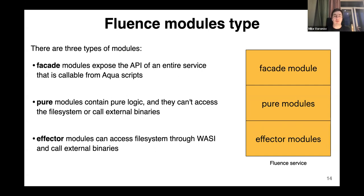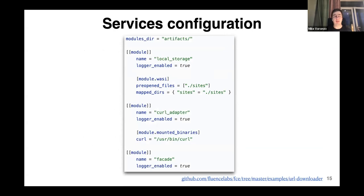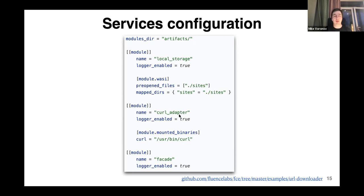The last one is a facade module. Facade modules expose the API of an entire service, and they can be called from Aqua scripts. Each service can have only one facade module. Also, each service is identified by a special service configuration file. You can see an example — the URL downloader consists of three modules, and each module can have its own settings. For example, you can adjust WASI settings for modules, saying that the local_storage module can only access files listed in the pre-opened files list.